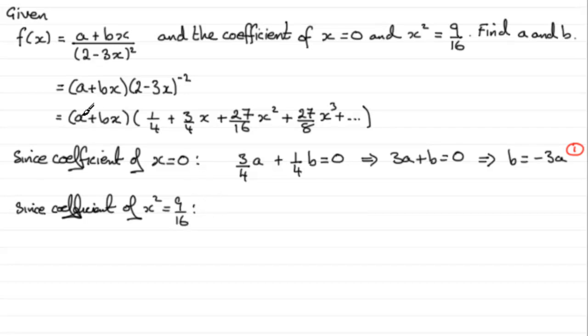When multiplying a with these terms, the x² term is a times 27/16x², so the coefficient is 27/16a. For the next x² term, when we multiply bx with 3/4x, that's 3/4bx², so the coefficient is 3/4b, and this equals 9/16.